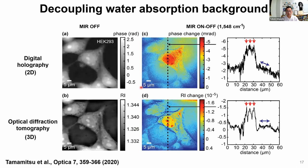The top figure shows a 2D image and the bottom shows a z-sectioned 3D image. In the 2D imaging case, we see a broad background from water absorption, since the cell is surrounded by water. On the other hand, with z-sectioning we can avoid this water absorption background and clearly see the intracellular structure. This z-sectioning capability is very useful for decoupling water absorption background in mid-infrared photothermal imaging.